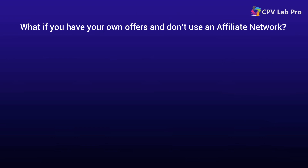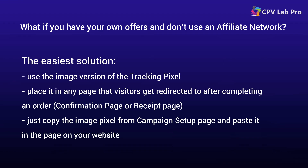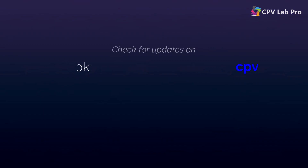But what if you have your own offers and don't use an affiliate network? If running your own offers or your own e-commerce website, the easiest solution is to use the image version of the tracking pixel and place it in the confirmation page, receipt page, or any page visitors are redirected to after completing an order. Because the tracking pixel uses cookies to identify the visitor who purchased, you don't have to add the SubID to the tracking pixel — just copy the image pixel from the campaign setup page and paste it in the confirmation page from your website.